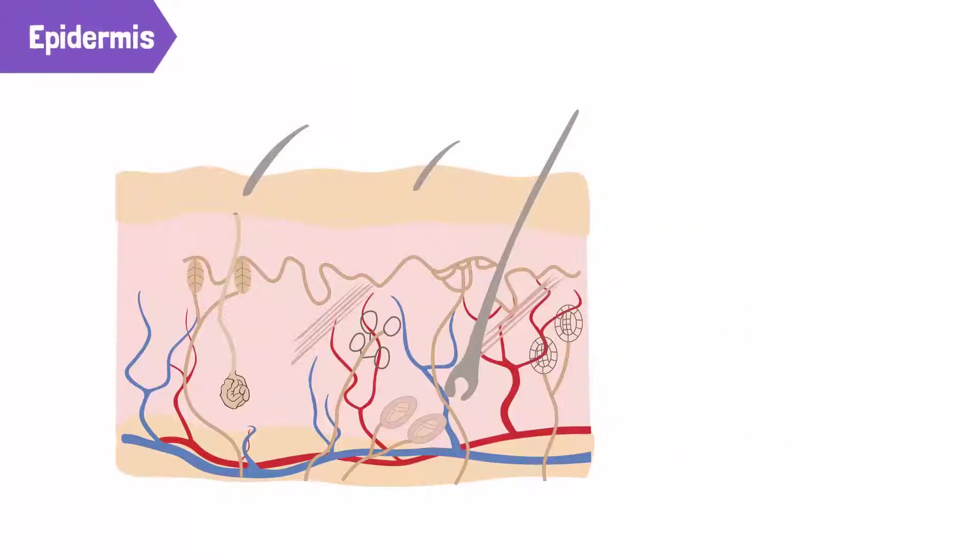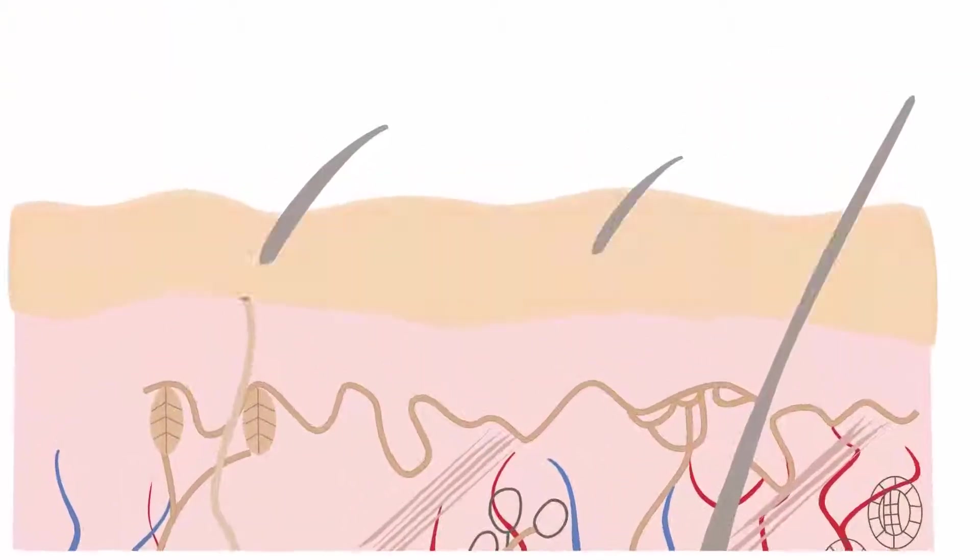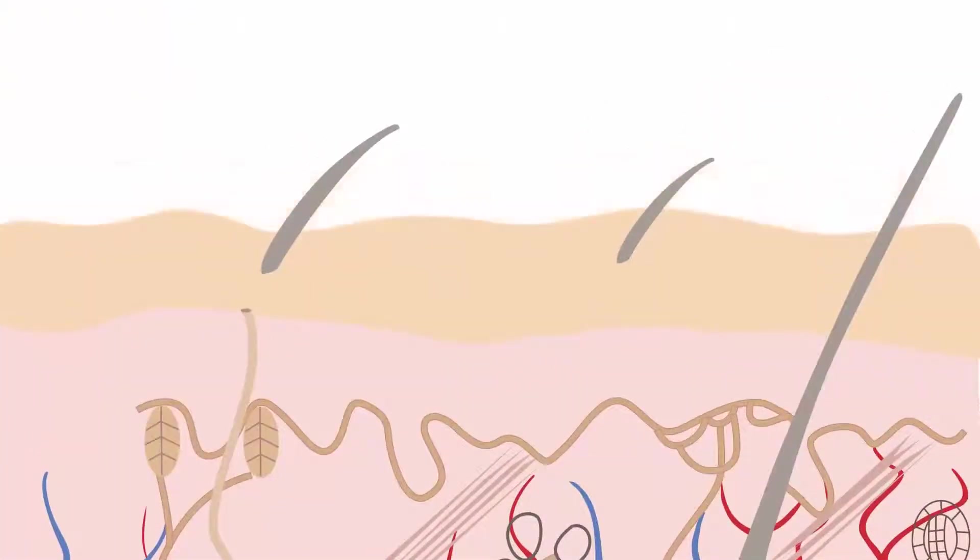The epidermis is the layer that we can see. It is mostly made up of dead cells. Throughout our lives, these dead cells peel away over time and new cells take their place from the living layers beneath.